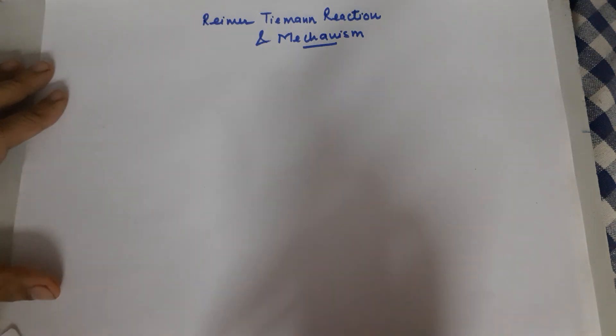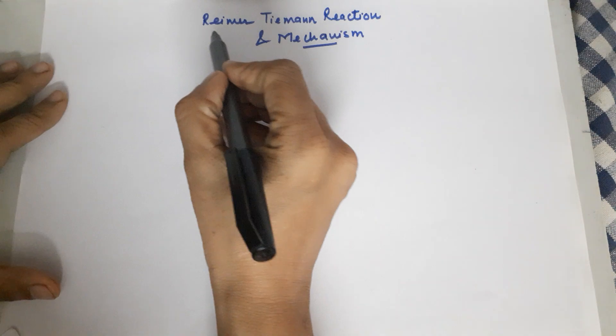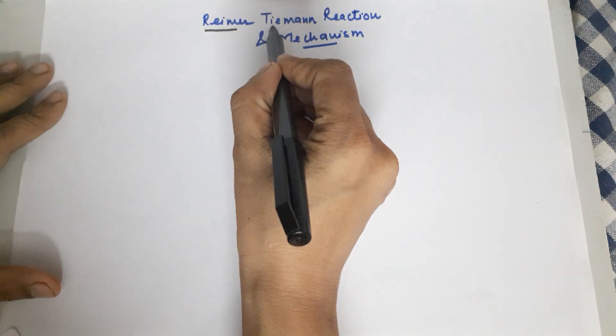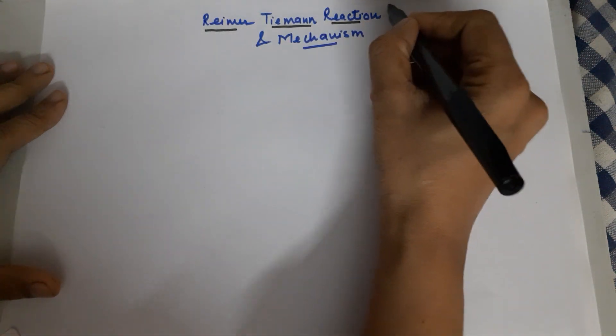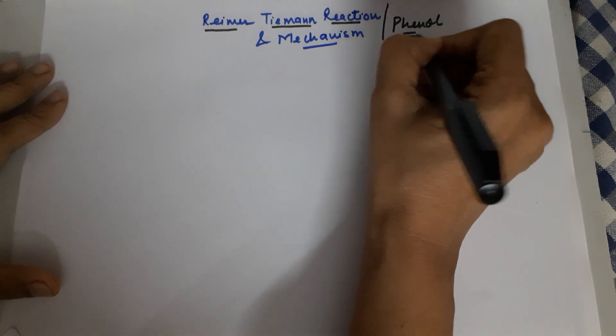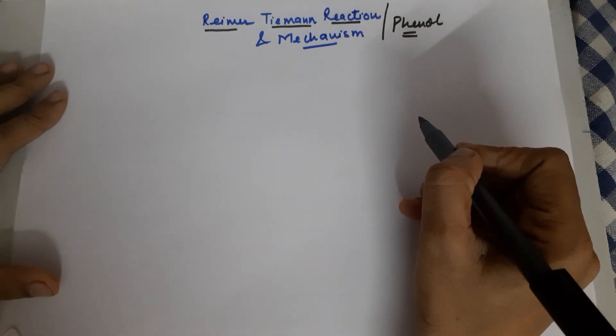A very good evening class 12th. Today's class is about an important name reaction known as the Reimer-Tiemann reaction. This reaction is for phenol.